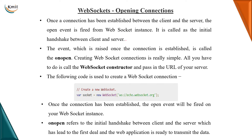To open a WebSocket connection, once a connection is established between the client and server, the open event is fired — this is the initial handshake. Creating a WebSocket connection is simple: call the WebSocket constructor, pass the URL to it, and the connection gets established to that particular server.